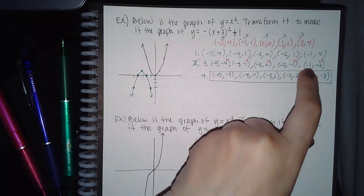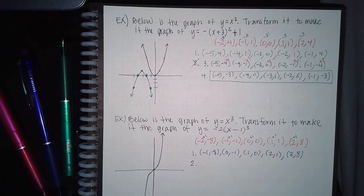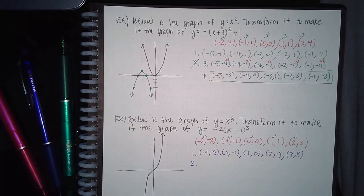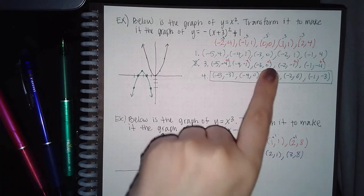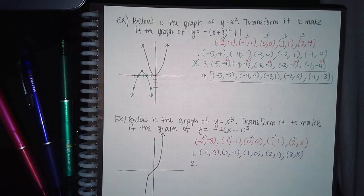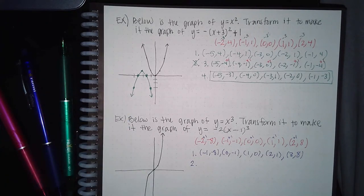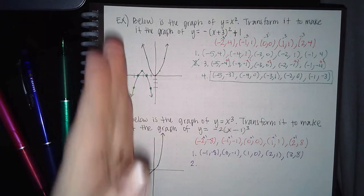Step four: vertical translation. We're adding 1 on the outside, so I add 1 to all y values, giving -3, 0, 1, 0, -3. Plot those points keeping the parabola shape — not a V shape. The result is a parabola that's flipped over, shifted left 3 units, and shifted up 1 unit, meeting all the transformation criteria.